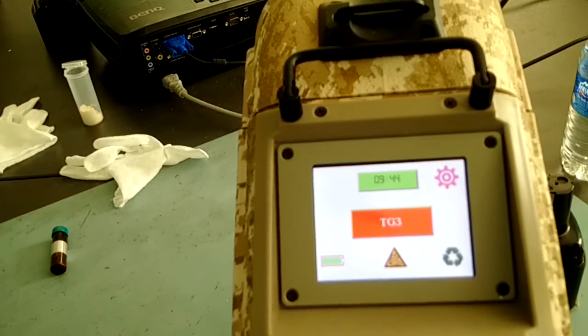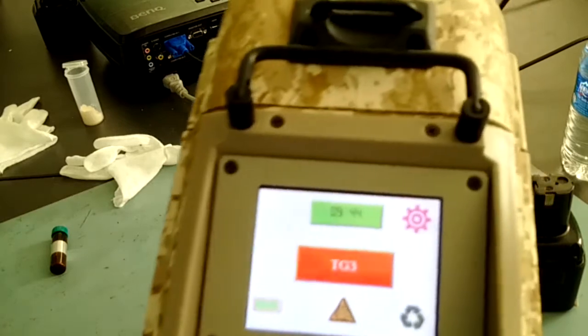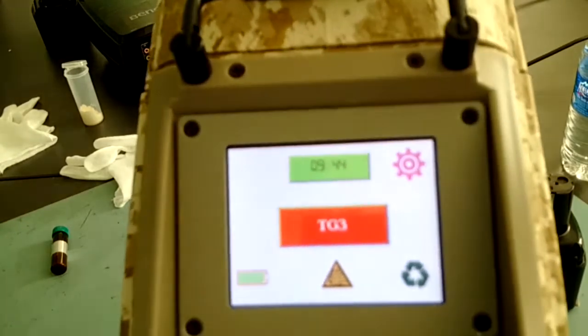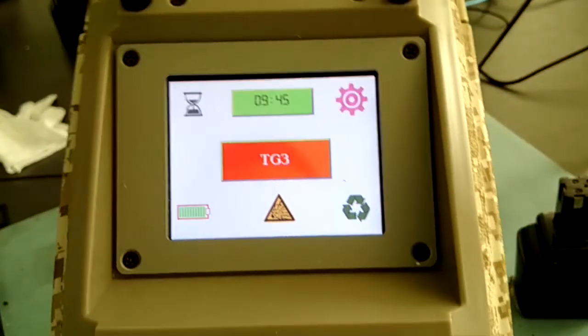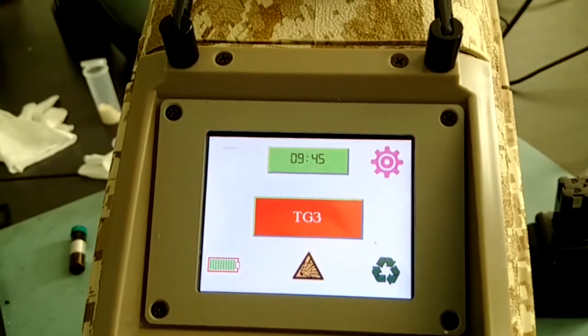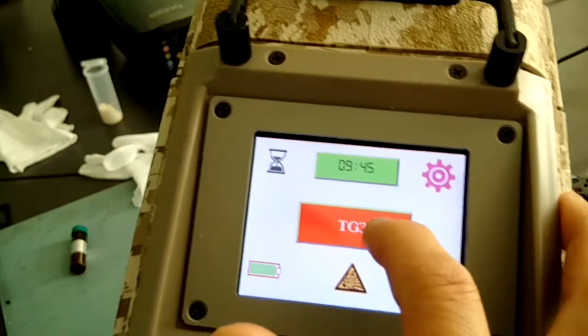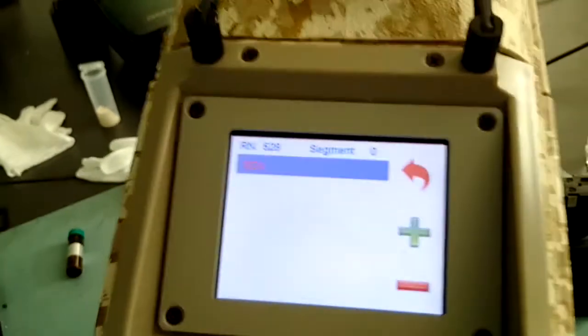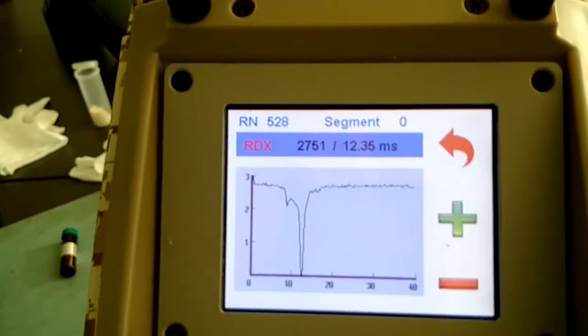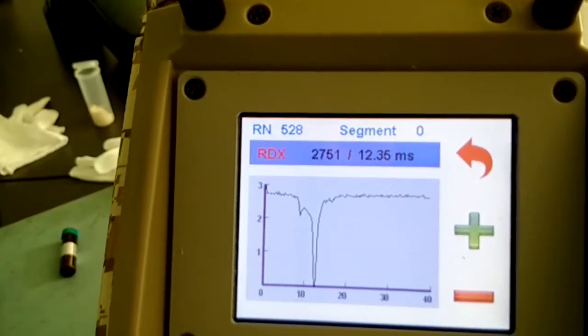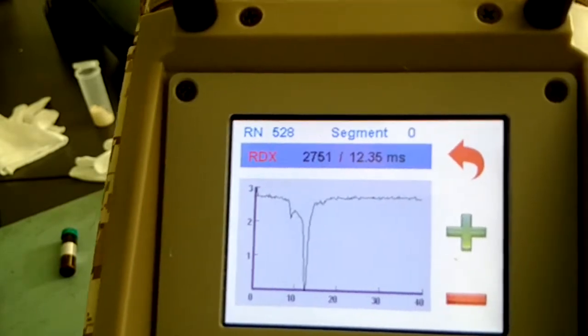Now you hear that it detects an alarm. It shows TG3, which stands for threat group number three, and you have an audible alarm and a visual alarm. Now let's see what TG3 has. If you press onto it, you have a more elaborate spectrum in the picture which shows you a peak which is found for RDX.